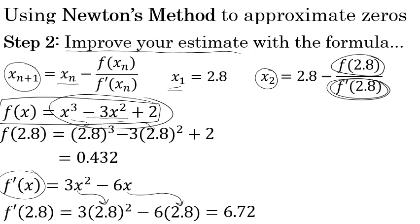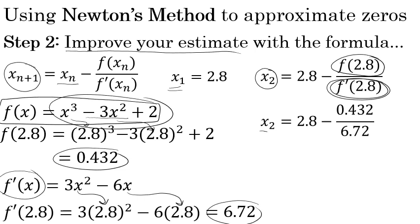So now that we know f of x and f prime of x, let's substitute that into the formula. x sub 2, a second better estimate, will be our original estimate, 2.8 minus the result of the estimate in the original function f of x over our original estimate in the derivative. 2.8 minus 0.432 over 6.72 is about 2.7357, at least to four decimal places.